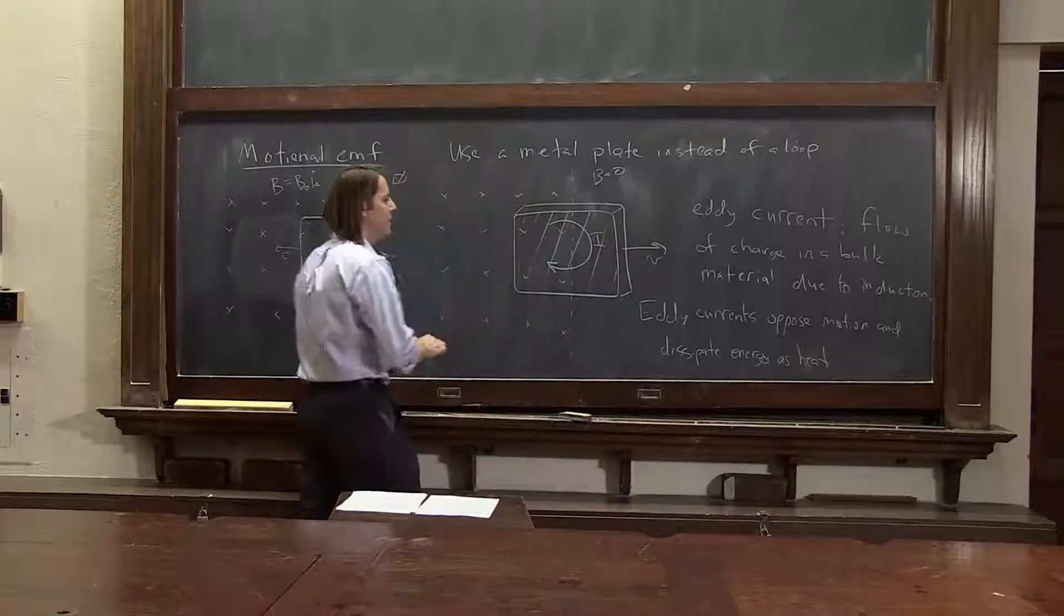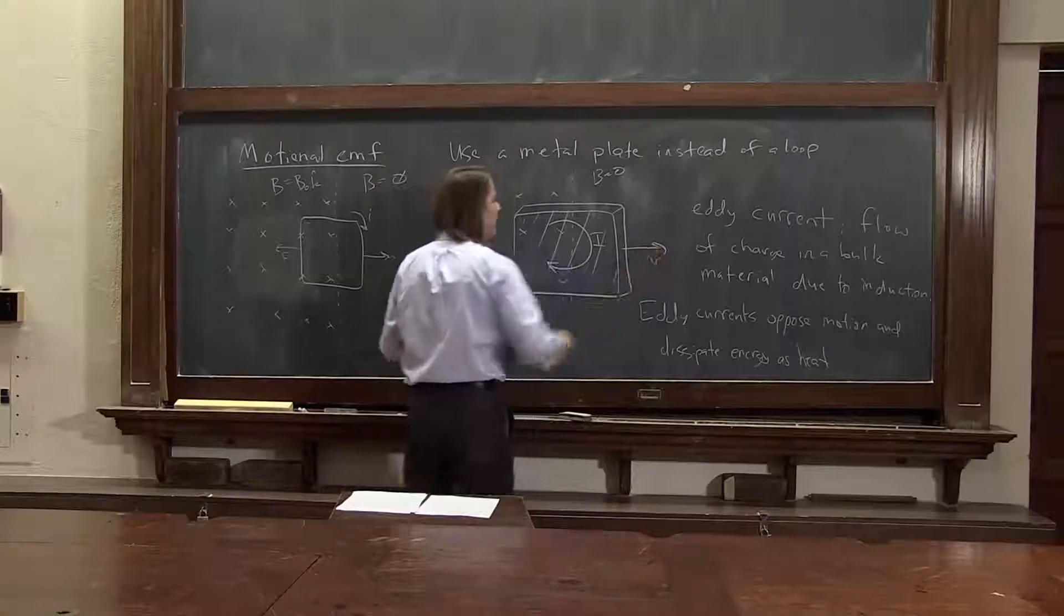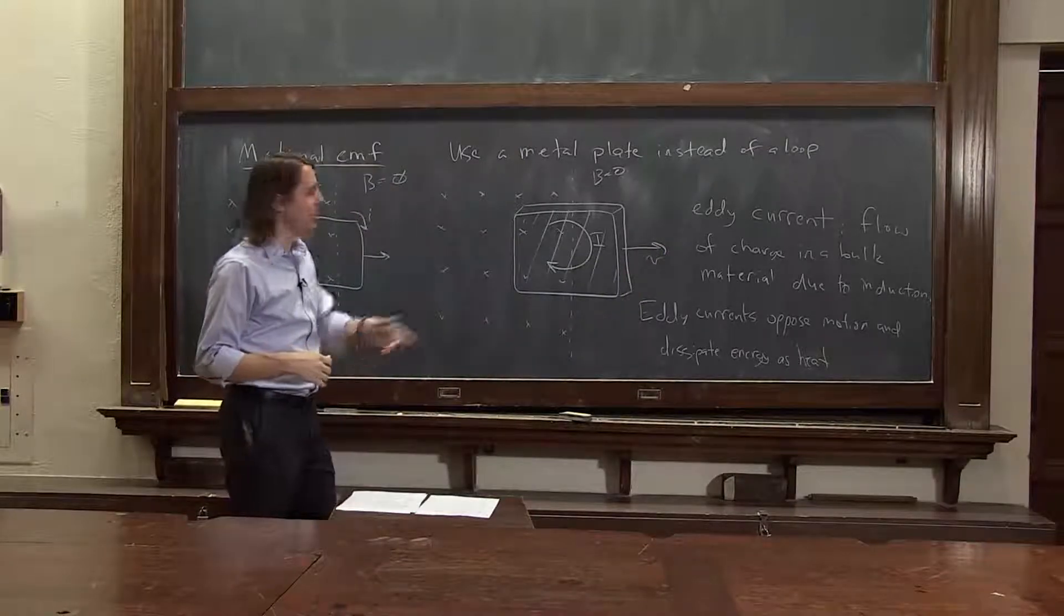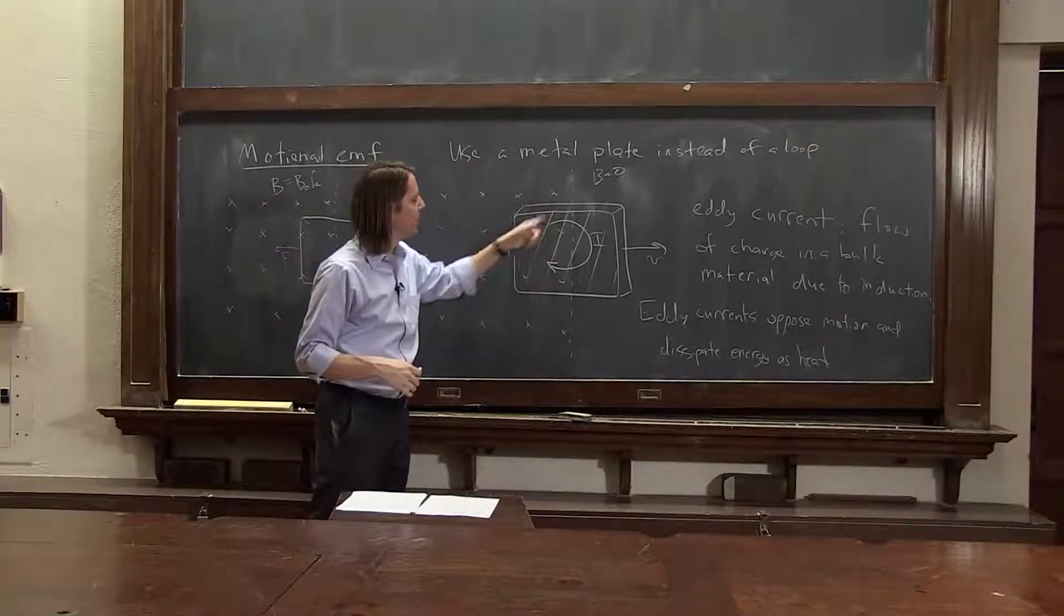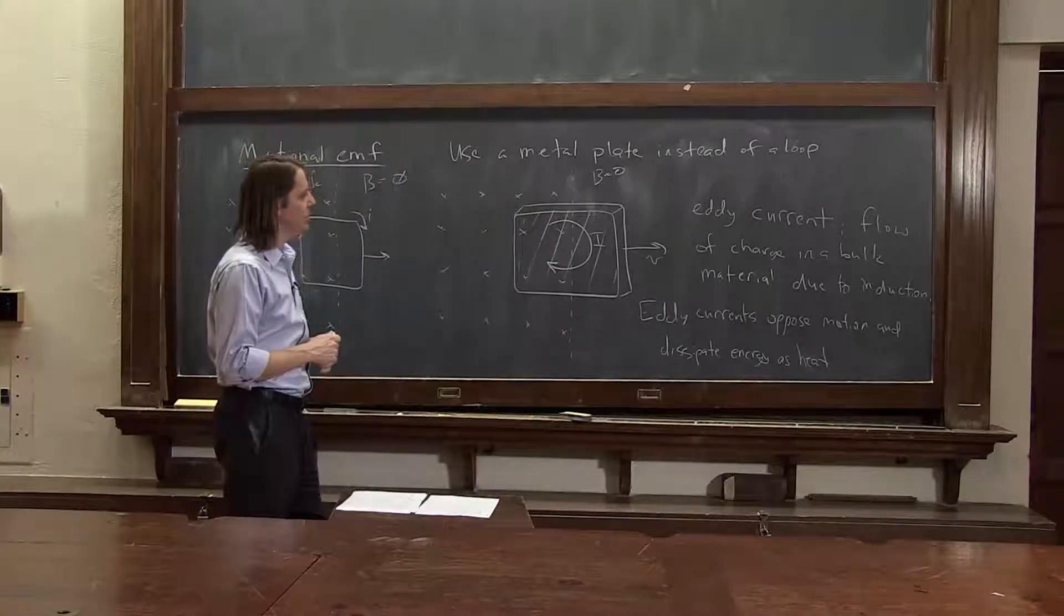So in this case, if you really had to do work to pull this thing out, because it's feeling a magnetic force pulling it back, the work that you do would be converted into heat in the eddy currents. Because you'll get a big current flow in here, but the material has some inherent resistivity in it. And that's where you'll lose your energy.